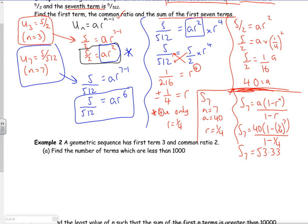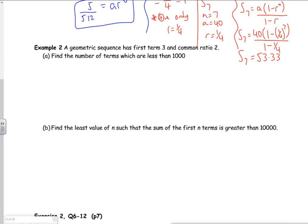Right, so look at the second example then. So it says a geometric sequence has first term of 3. So I know that a is 3, and a common ratio of 2. So r is 2.